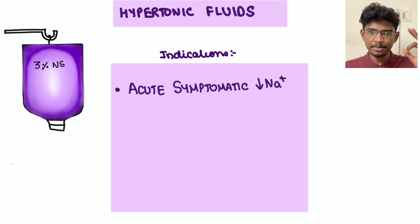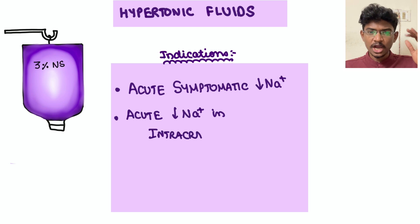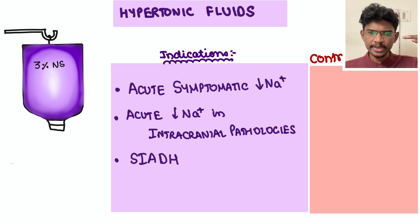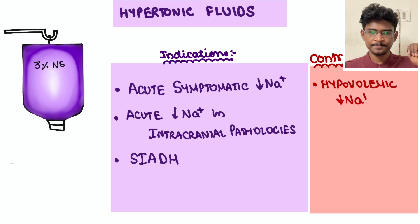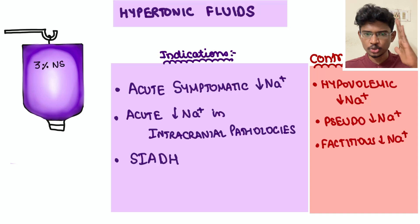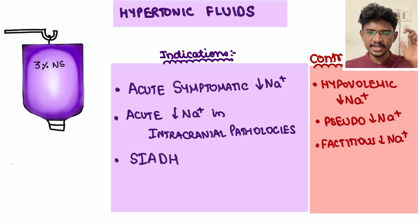3% NS (hypertonic saline) is indicated for acute symptomatic severe hyponatremia and acute hyponatremia with intracranial pathologies. Contraindications: it should never be given in hypovolemic hyponatremia, factitious (pseudo) hyponatremia — these must be ruled out before considering 3% NS.